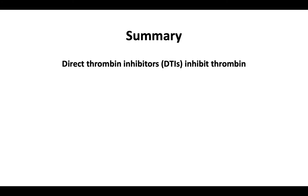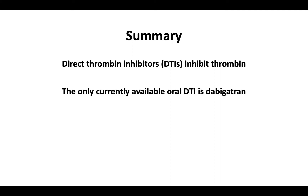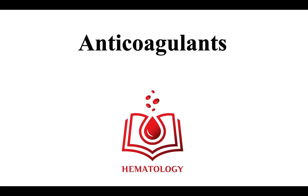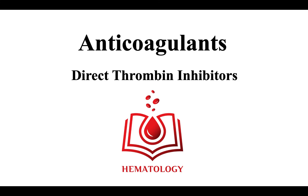In summary, direct thrombin inhibitors inhibit thrombin. The only currently available oral direct thrombin inhibitor is dabigatran. In the United States, the available parenteral direct thrombin inhibitors are argatriban and bivalirudin. This concludes our video on anticoagulants with a focus on direct thrombin inhibitors.